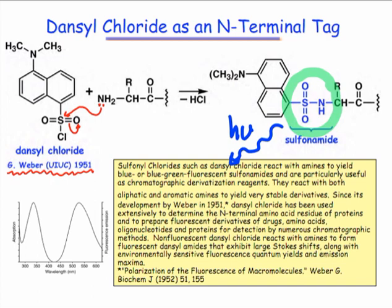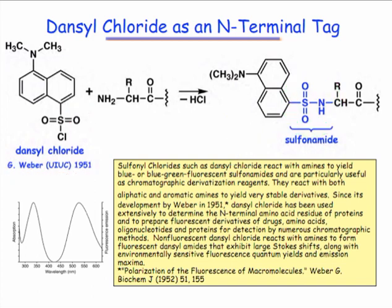In the next webcast, we'll learn how to couple the ideas behind identification of the N-terminus with selective cleavage of the N-terminal peptide bond. By repetitive cleavage and characterization, we can determine the identity of each amino acid in a peptide sequence from the N- to the C-terminus.